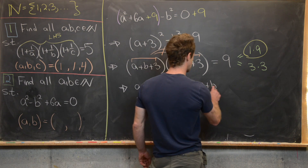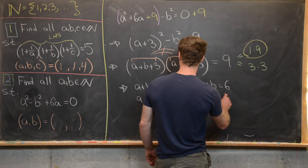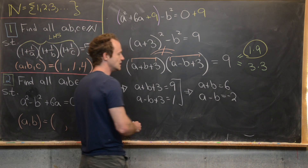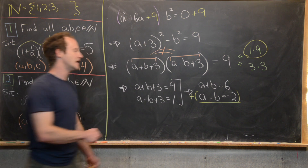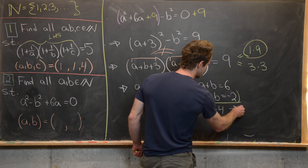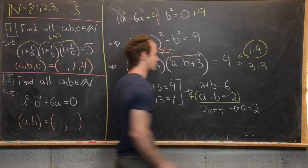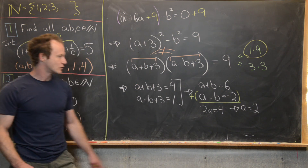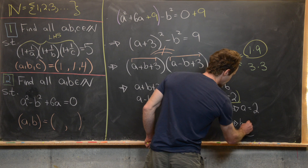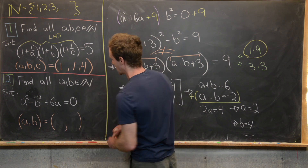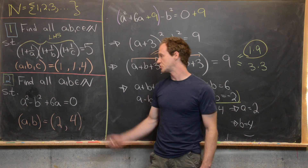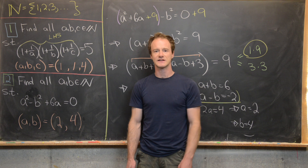Moving all the numbers to the right-hand side gives us a + b = 6 and a − b = −2. Adding the two equations: 2a = 4, so a = 2. Plugging back in: 2 + b = 6, so b = 4. That gives us the solution (a, b) = (2, 4), which is the only solution over the natural numbers.